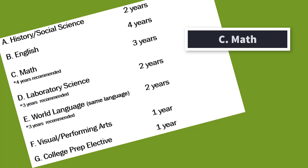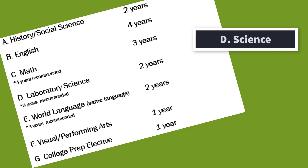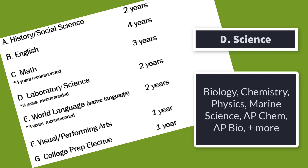Subject requirement C is math. It is required for you to take three years, but four are recommended. Some examples of math that meet this requirement are Algebra 1, Geometry, Algebra 2, plus any upper level math courses. Subject requirement D is science. To meet this requirement you must have two years in two different disciplines, with three or even four years recommended. Please check with each individual campus you are applying to, to make sure they don't require more years of science. Some examples of classes that meet this requirement are biology, chemistry, physics, marine science, AP Chemistry, and AP Biology.